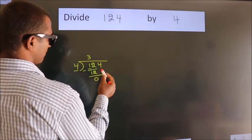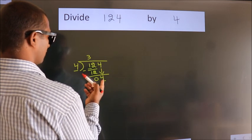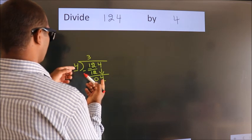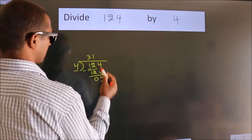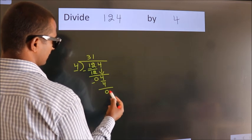After this, bring down the beside number. So 4 down. When do we get 4? In the 4 table. 4 ones is 4. Now we subtract. We get 0.